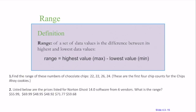Range. The range of a data set is the difference between its highest and lowest values. If I look at these number of chocolate chips in cookies, I would take my largest value minus my smallest value. In this case, 26 minus 22, I have a range of four.